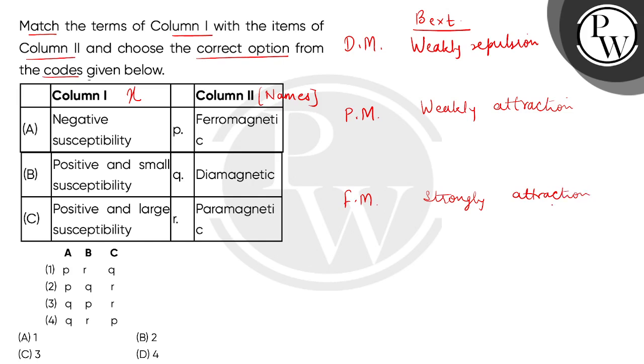Based on them, we will check their susceptibilities. Diamagnetic susceptibility is less than 0. It means entry A, negative susceptibility, will match entry number Q of column 2.